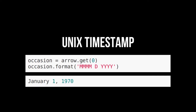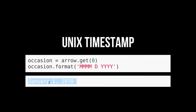So if we do arrow.get(), we can actually specify a Unix timestamp. I was trying to remember earlier when the Unix time zero was. We can find out exactly right here — we're going to give get() a Unix timestamp of zero. We're going to use the format codes: MMMM gives the full word of the month, D gives just the day number with no leading zero, and YYYY gives the year. So that zero time actually represented January 1st, 1970. If you're interested in Unix time, the Wikipedia article is great — I'll put a link in the show notes.